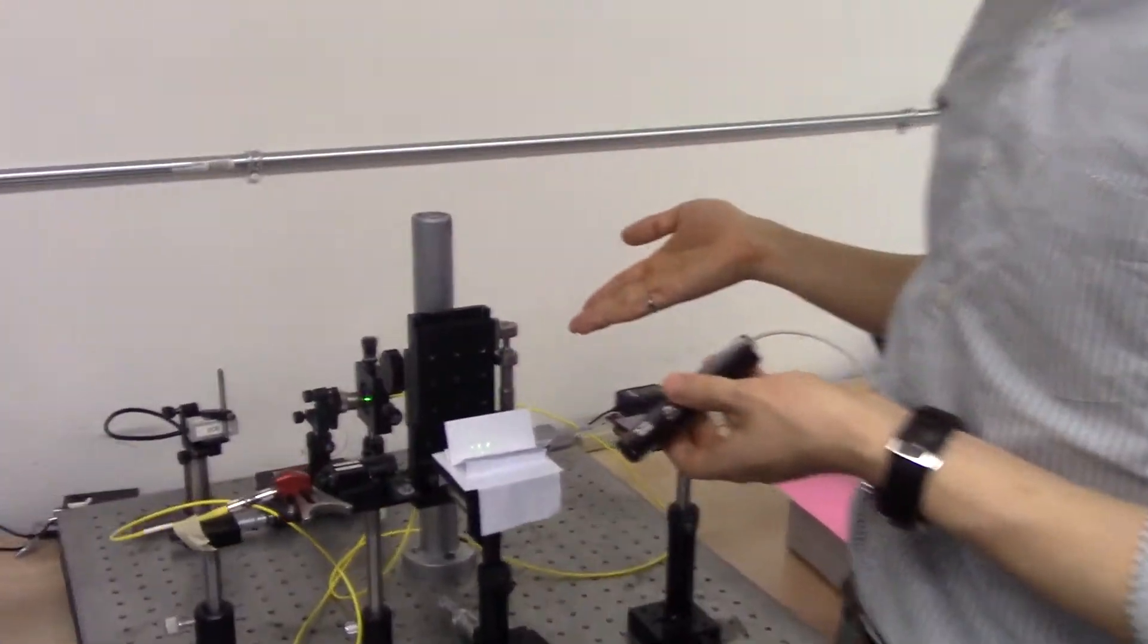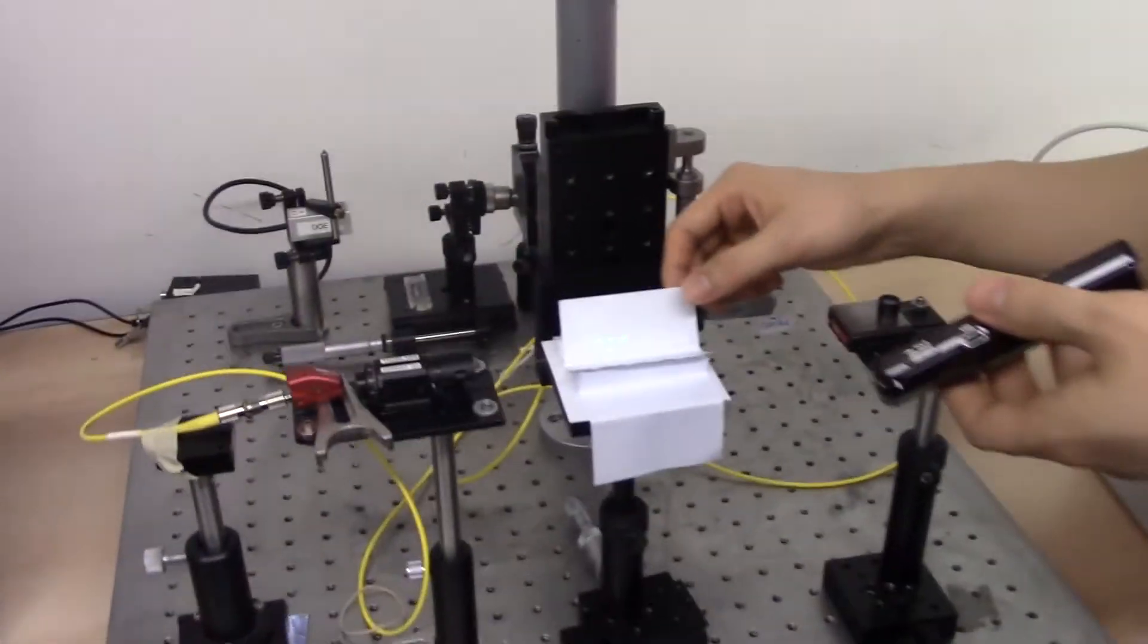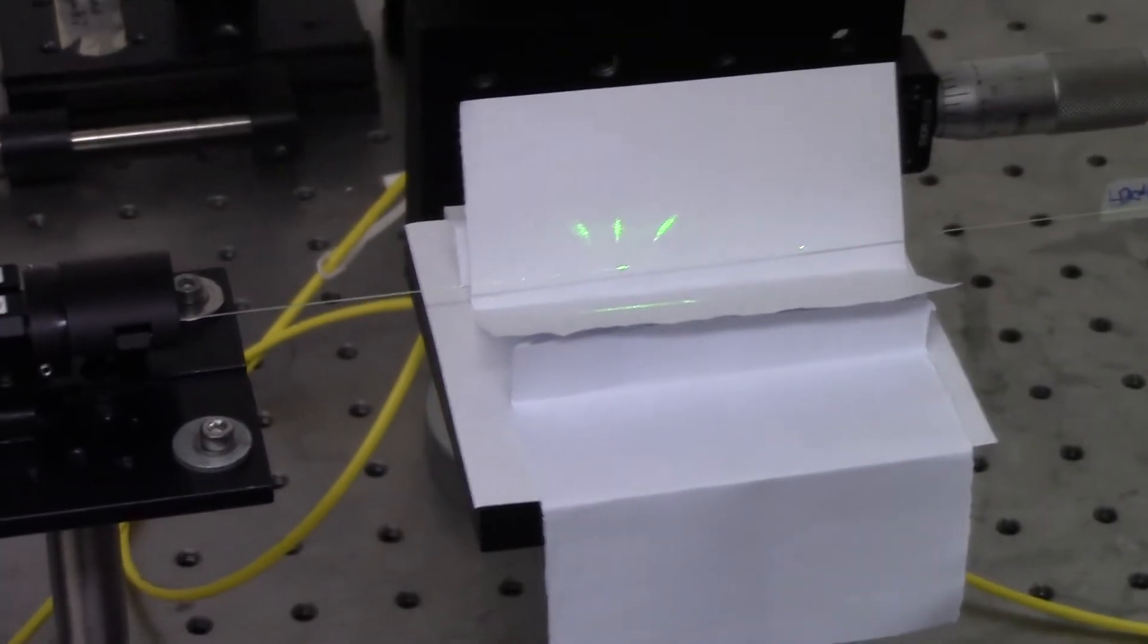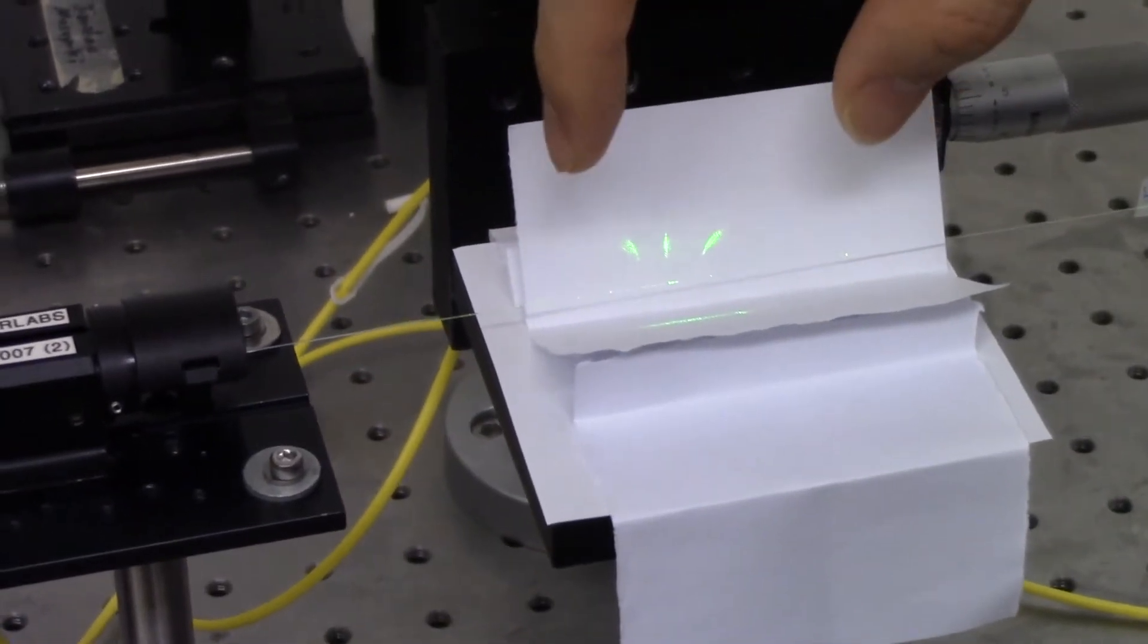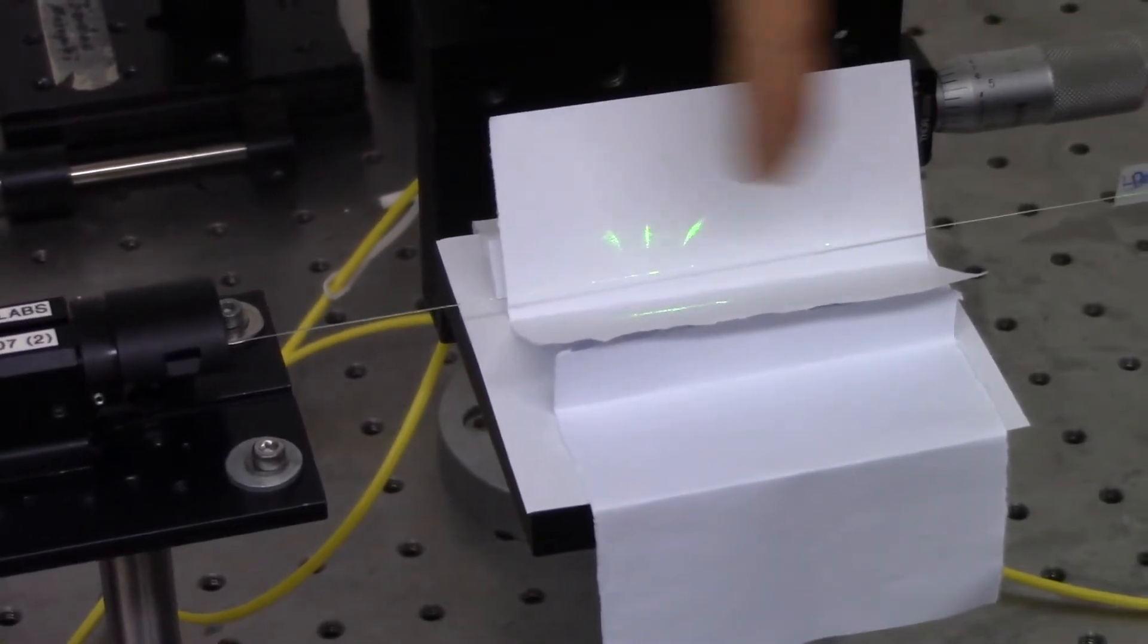This is a demonstration of our project. We are injecting the light and as you can see this one is focused as a chirping effect and if you see the other side this one is not focused because of the blazing effects.